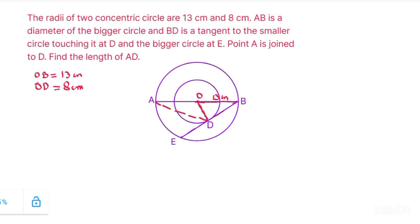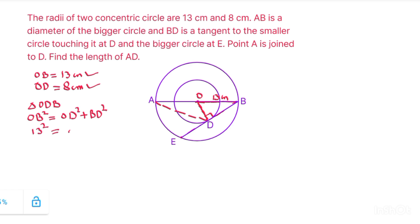We know that the radius is perpendicular to the tangent, so this angle will be 90 degrees. Triangle ODB is a right angle triangle. By Pythagoras theorem we can write: OB is 13 centimeter, OD is 8 centimeter, so 13 squared equals 8 squared plus BD squared.